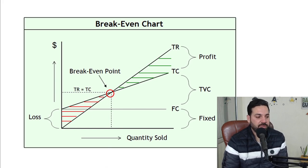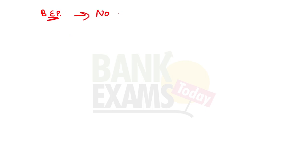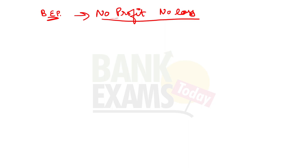What is a break-even point? Let me explain that with the help of an example and a diagram. Break-even point is a situation where you make no profit and no loss. How many units of products do you need to sell to reach a point where you make no profit and no loss?